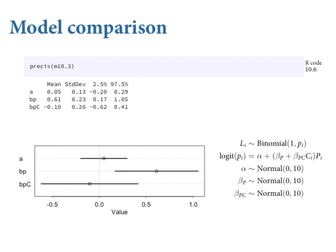Let's look at the coefficients on 10.3 to check and make sure we know what's going on. The hypothesis is that when the other individual is present, they will pull the prosocial lever more. But the marginal posterior distribution for the interaction effect is all over the place and it's slightly negative — there's not much signal.